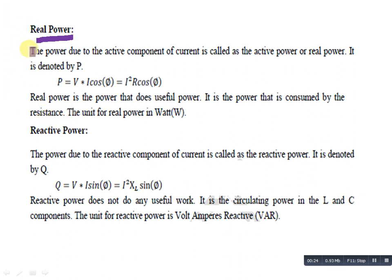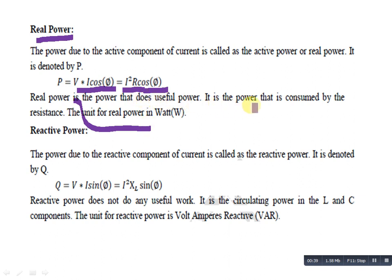Since V equals I times R, the real power formula becomes I squared times R times cos phi. Real power is the power that is consumed by the resistance. The unit of real power is Watt.